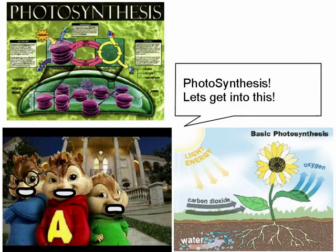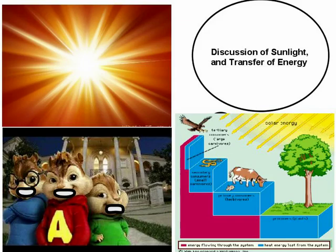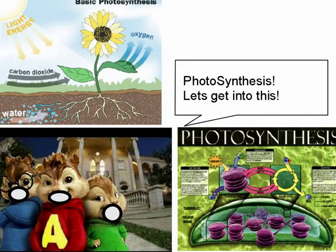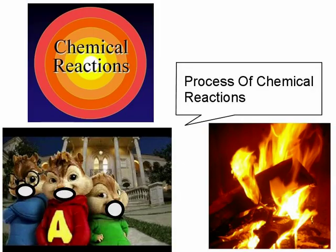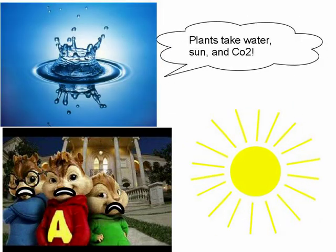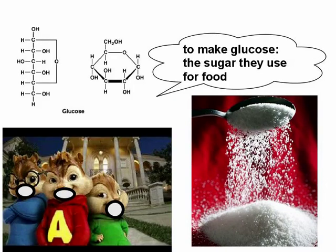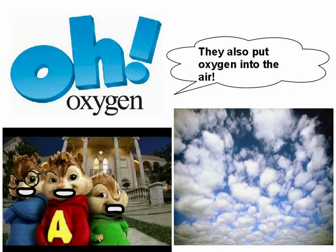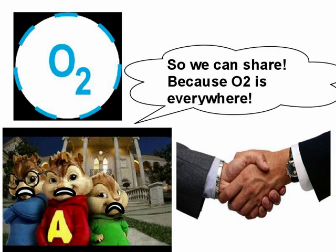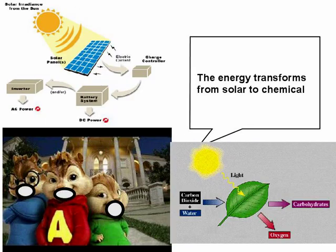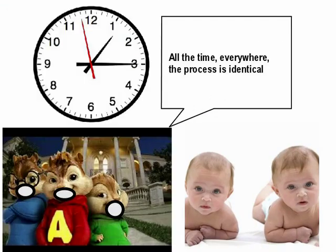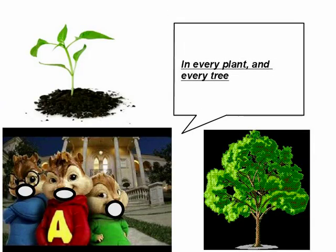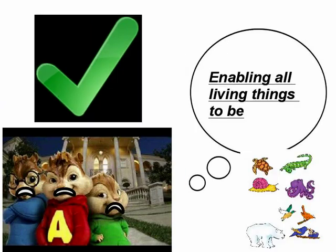Photosynthesis is the process of chemical and natural. Photosynthesis — into the discussion of sunlight and transfer of energy, into the process of chemical and natural. Plants use water, sun, to make glucose, and it's going to be used for food. They also put oxygen into the air so we can breathe, because oxygen is everywhere. The energy transforms so many chemicals, all the chemicals everywhere. The processes are available in every plant, enabling all living things to be.